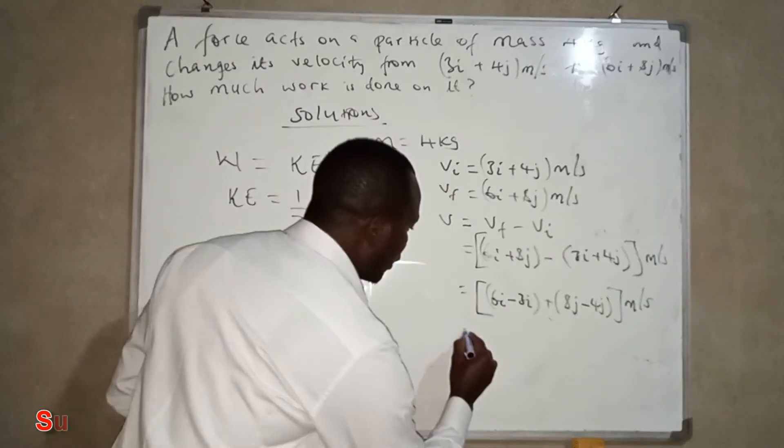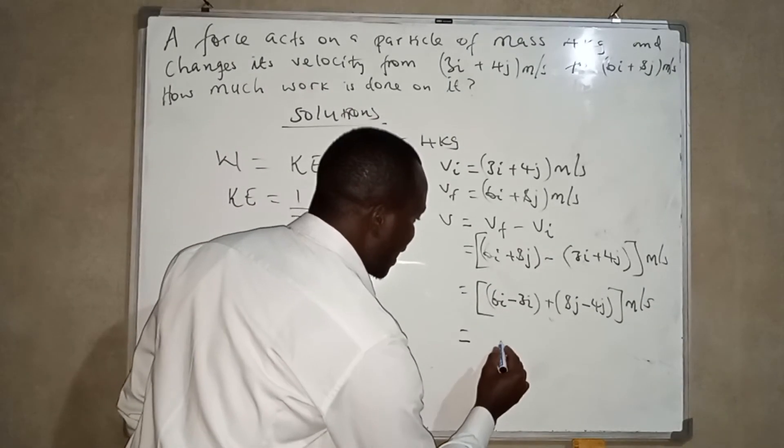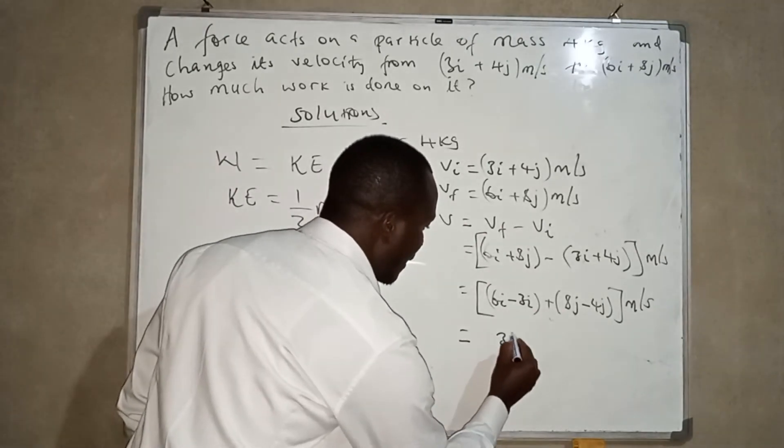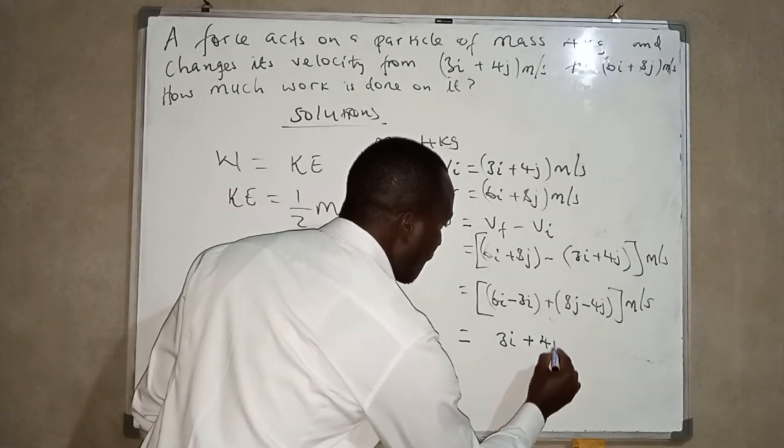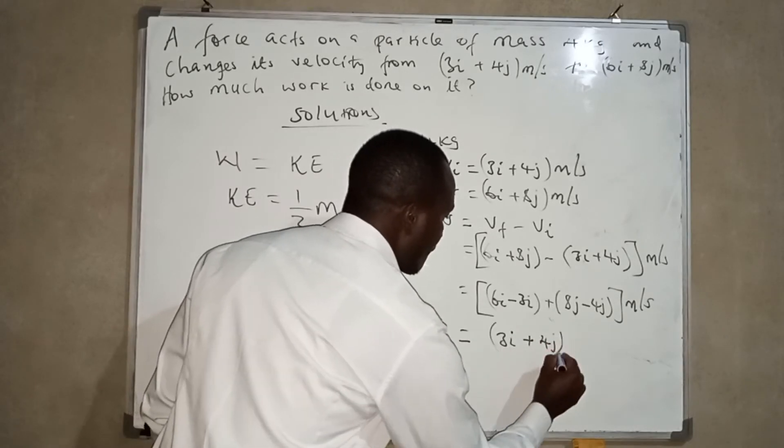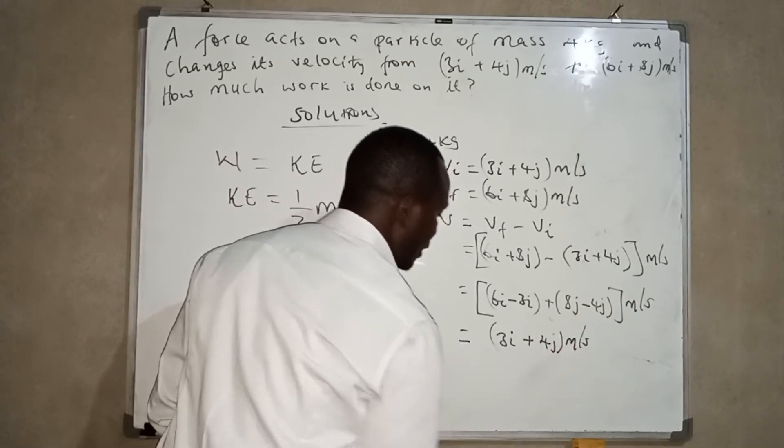From this, we are going to find that we have 3i, and then 8 minus 4, we have 4j. These are meters per second.